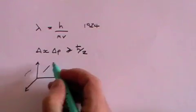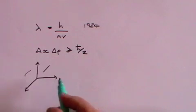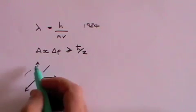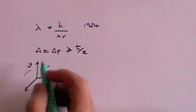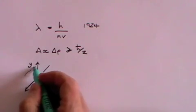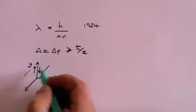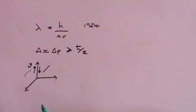That will have a spin which could be in any direction, but the component of that spin in, say, let's call this the y direction, the component of that spin will either be up or it will be down. Those are the only two options.